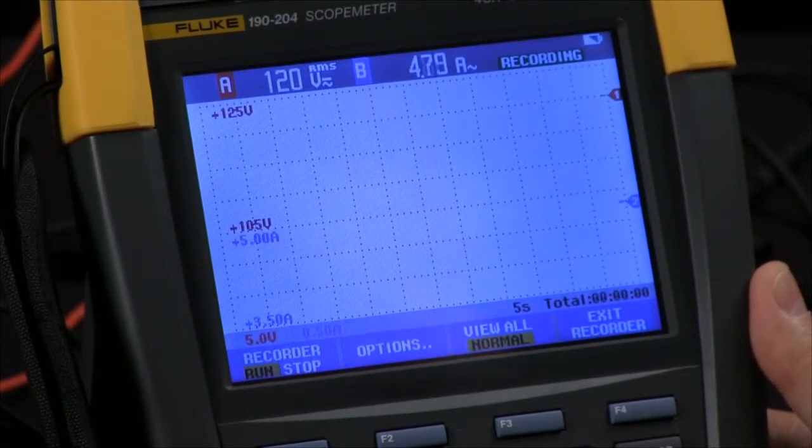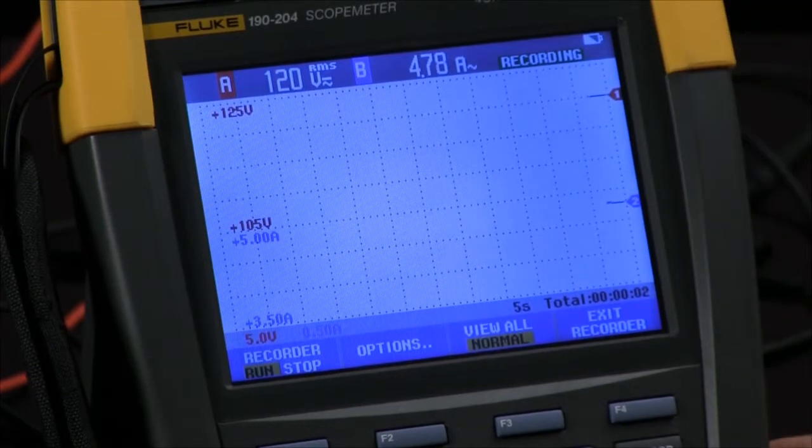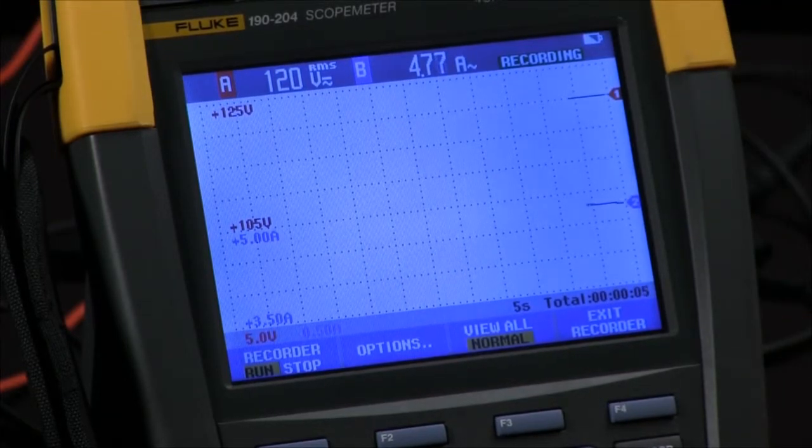To begin we simply select trend plot and you'll see how we start automatically to graph a line across the screen.